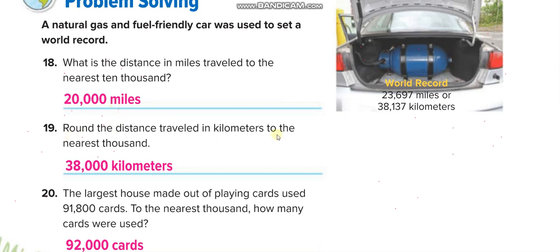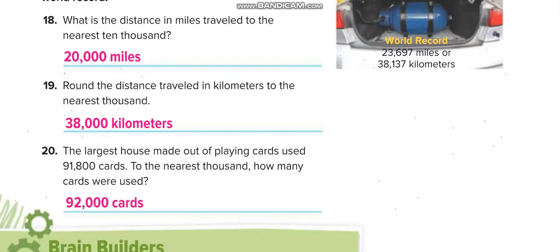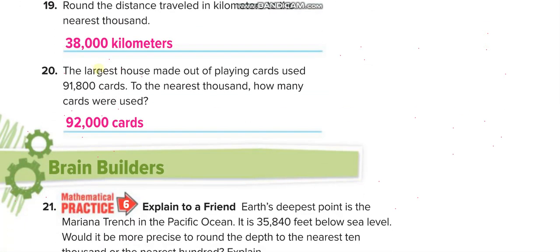Now round the distance traveled in kilometers to the nearest thousand. Ones, tens, hundreds, thousands — this is the thousands place. The next digit is 1, which is less than 5, so the 8 stays the same. Remaining digits become zeros, giving us thirty-eight thousand kilometers.